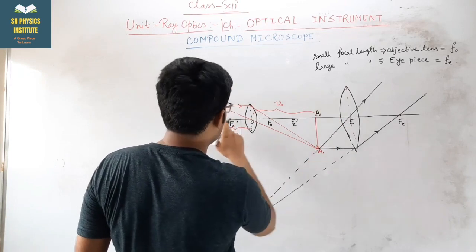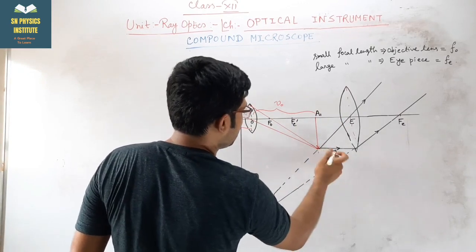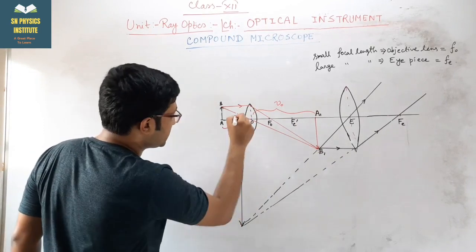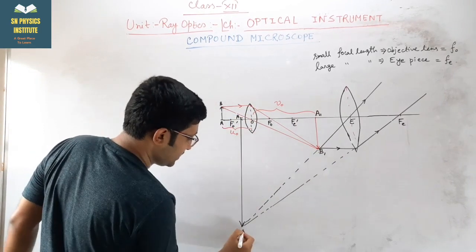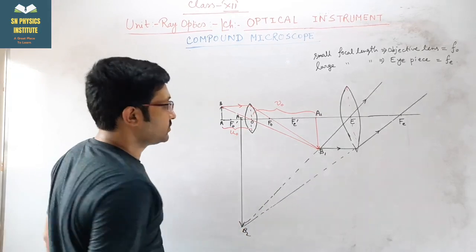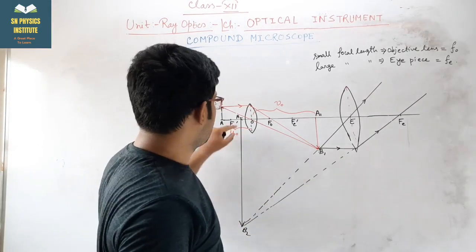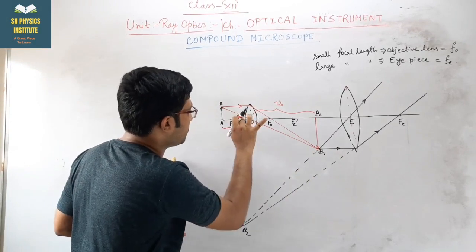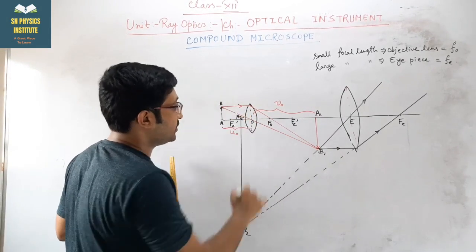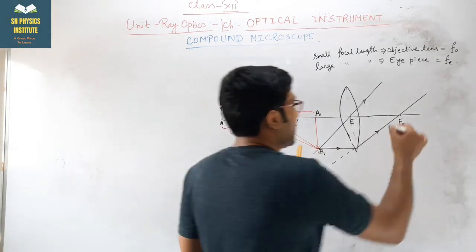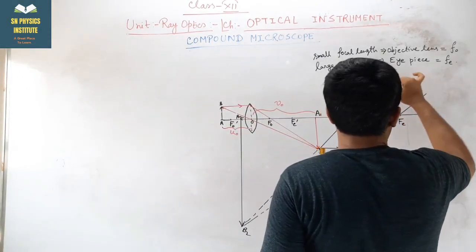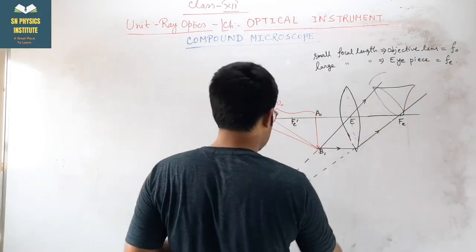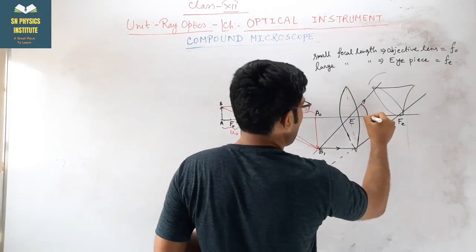The intermediate image is A1B1 and the final image is A2B2. If the eye is very close, the final image A2B2 makes an angle beta to our eye. If we keep the object at the same place without the instrument, it makes an angle alpha. The final image A2B2 is formed at the least distance of distinct vision, which is capital D.